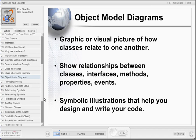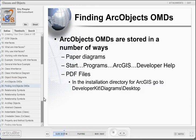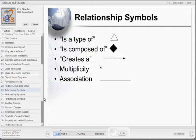Let's spend some time discussing object model diagrams, which are simply visual depictions of how classes relate to each other. Object model diagrams are used to show relationships between classes, interfaces, methods, properties, and events. They are symbolic illustrations that help you understand how to use the classes and interfaces in your code. ArcObjects has an object model diagram that will help you understand the relationships between classes in these programming libraries. Conceptually, there is only one OMD in ArcObjects. However, since ArcObjects has been broken up into multiple libraries, each library contains a separate OMD. Think of an OMD as a roadmap for your programming tasks.